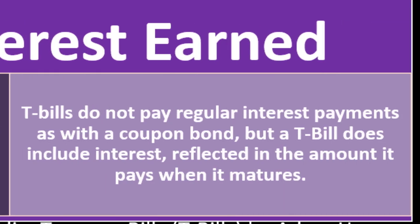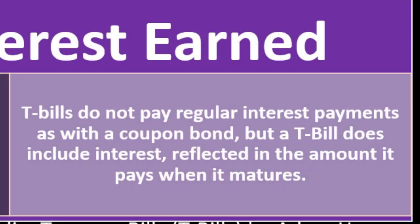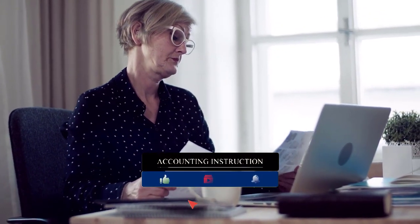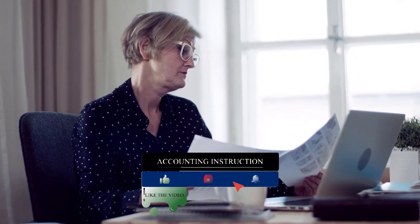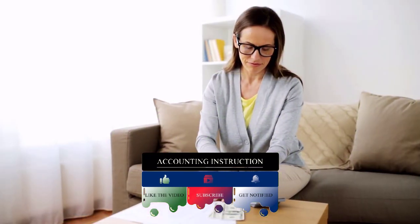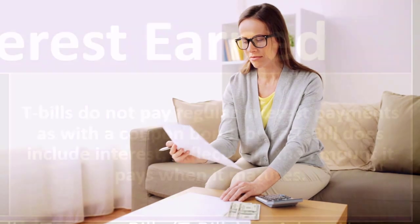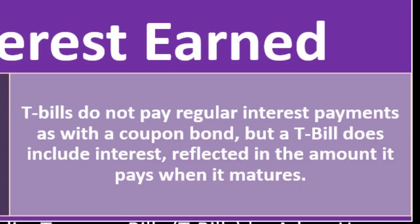T-bills do not pay regular interest payments as with coupon bonds. A normal bond might pay you interest periodically, possibly semi-annually. But T-bills are so short in nature — only a year long — that it doesn't really make sense to pay interest on a periodic framework. Instead, at maturity, you're paying the interest. It's similar to any other kind of bond, but instead of having the interest rate pay out periodically, you get the interest at the maturity point, with the bond having an amount higher than you paid for it. A T-bill does include interest reflected in the amount it pays when it matures.